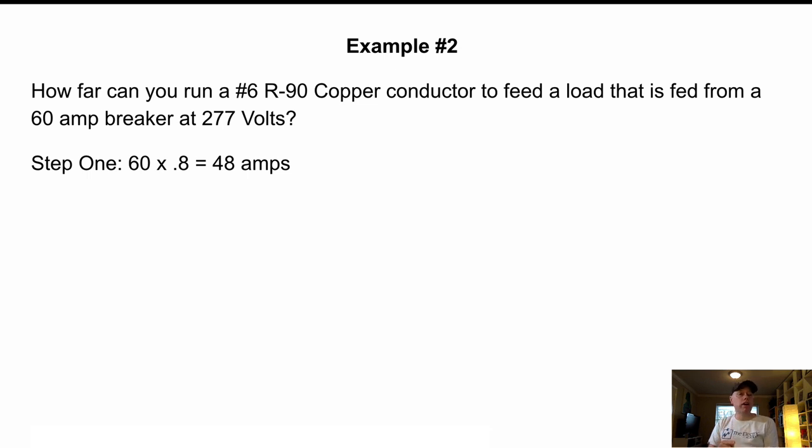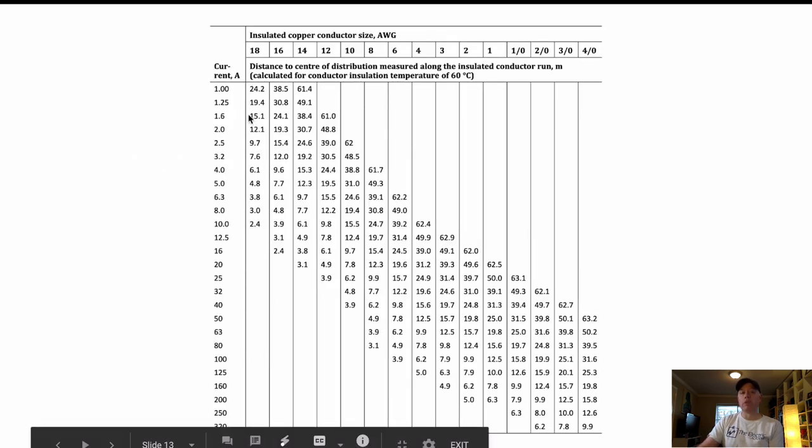Example two. How far can you run a number six R90 copper conductor to feed a load that is fed from a 60 amp breaker at 277 volts? So again, what we're doing here is the load isn't drawing 60 amps. It's being fed from a 60 amp breaker at 277 volts. So step one, we don't know the load, but we do know the breaker. So we take that at 80 percent because why? The code tells us so. 8-102 tells us that we use 80 percent of the size of the circuit breaker or the overcurrent device. Same idea. So we get 48 amps.